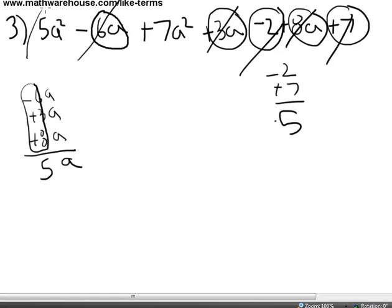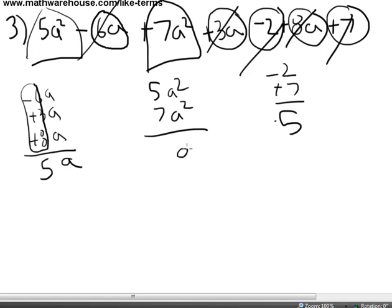And we are left with 5a squared and 7a squared. So 5a squared, 7a squared. You know it will be a squared and then we add the coefficients to get 12. So here is our final answer. 12a squared plus 5a plus 5.